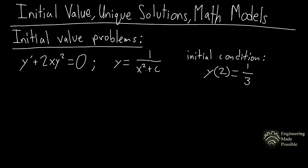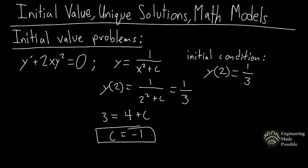It's called a one-parameter family of solutions because it has only one arbitrary constant. We have an initial condition: when x = 2, y = 1/3. To find c, we plug in x = 2 and solve: y(2) = 1 / (4 + c) = 1/3. Solving gives c = −1.